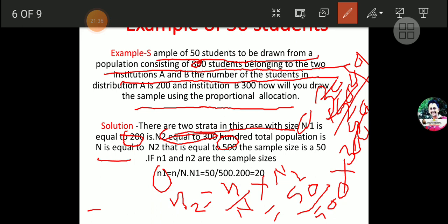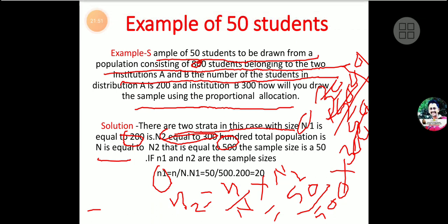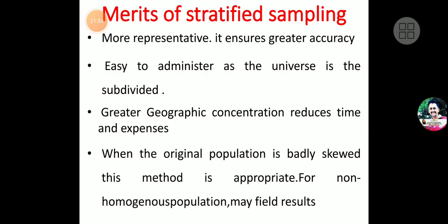So from Institute A, out of 200 students, we have to take 20 students in the sample of 50. And from Institute B, we have to select 30 students from 300. This is the proportional allocation. You have to solve this example on your own so you will come to know it well.